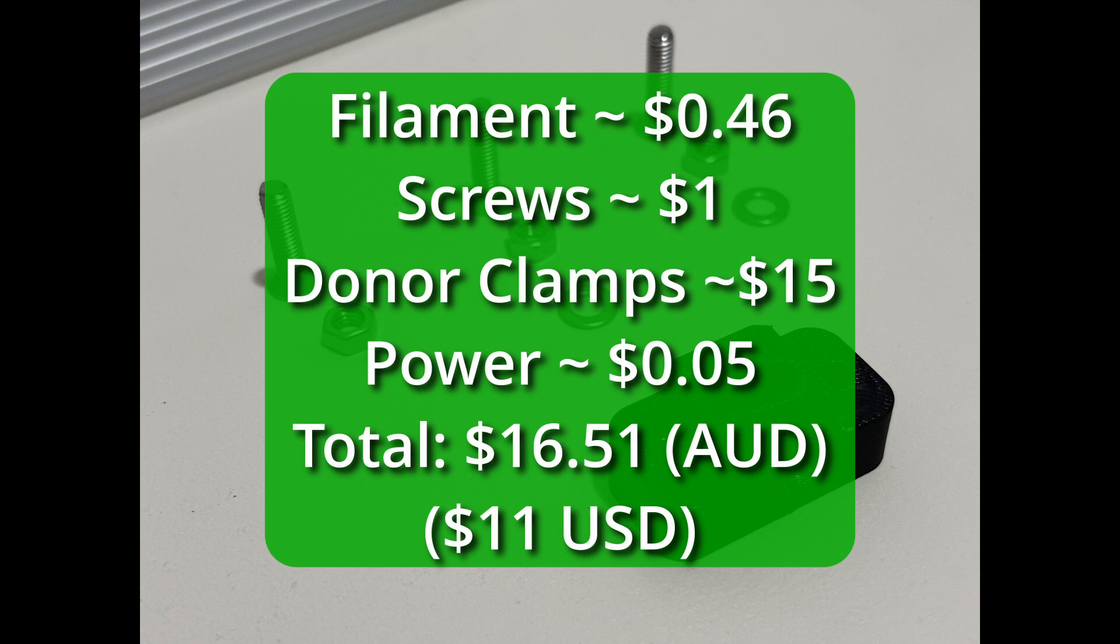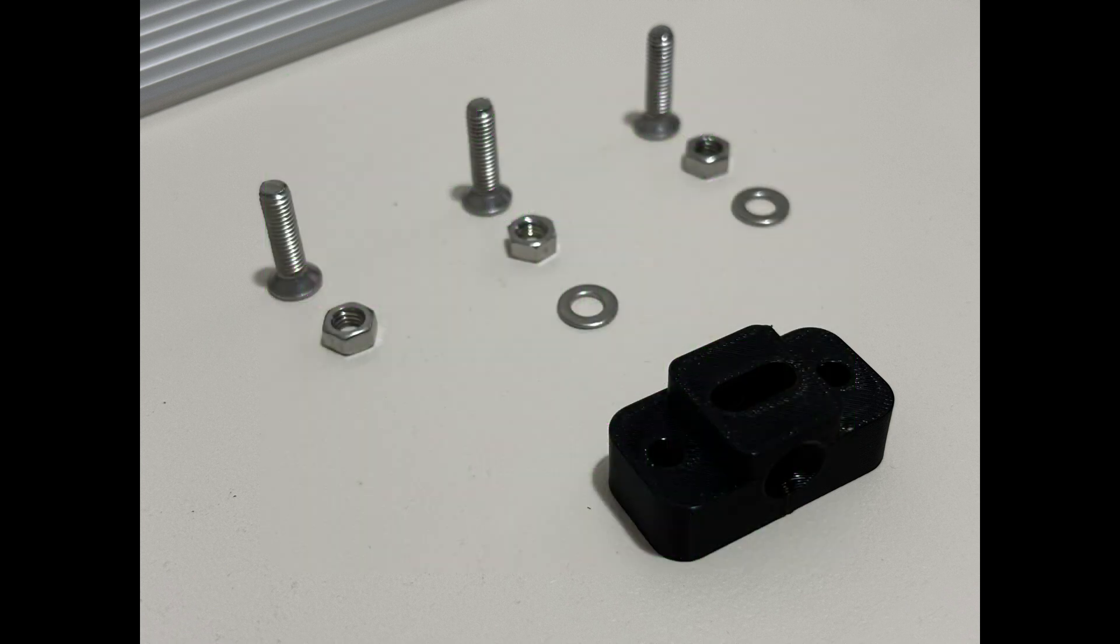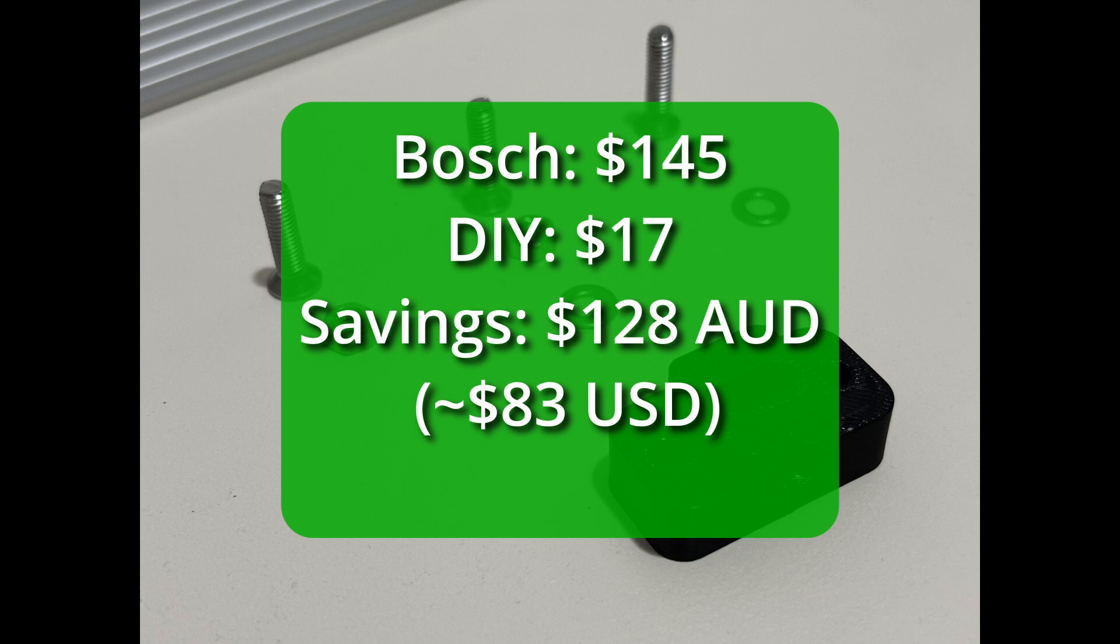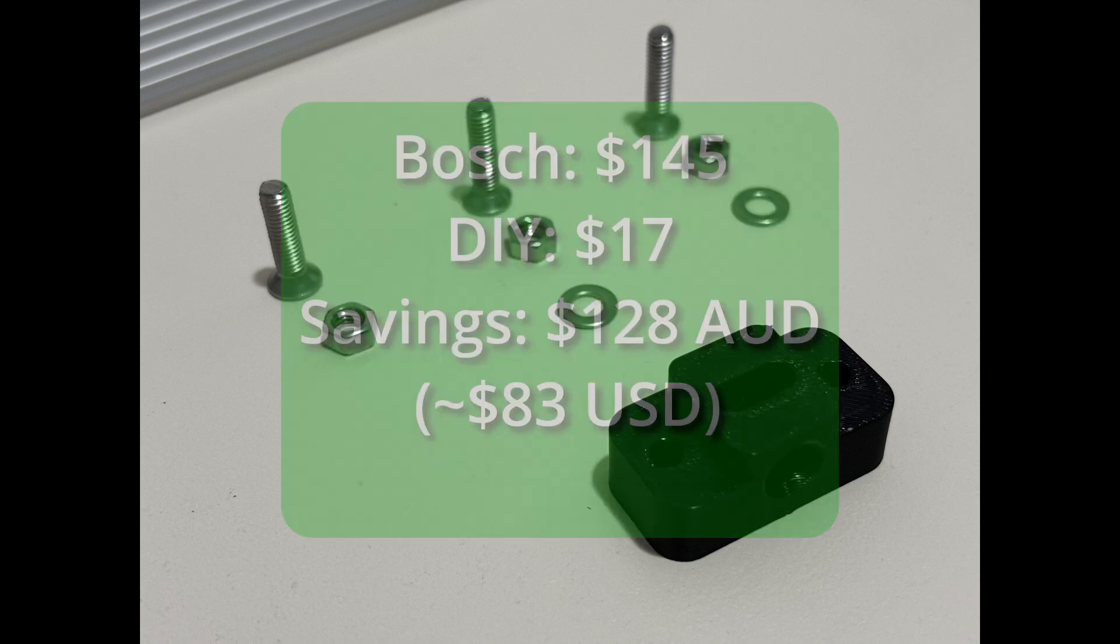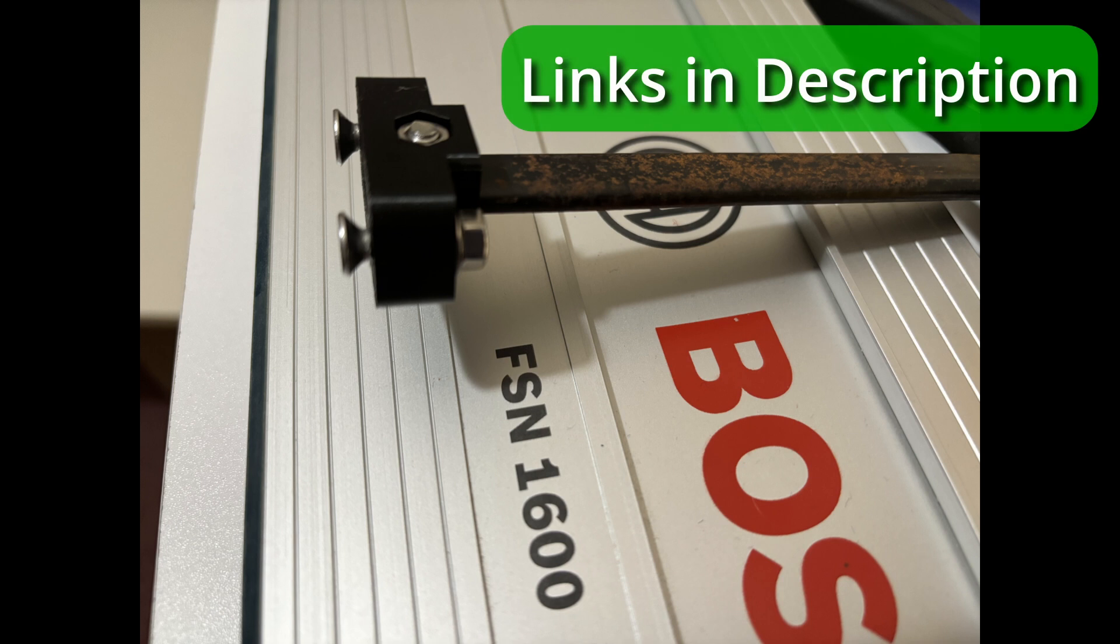The most expensive part of this project was the donor clamps. They were about $15 Australian dollars, bringing the total for this project to just over $16. With the Bosch clamps costing $145 Australian dollars locally and the DIY version $17, that's a saving of $128 Australian dollars. I'll put links to the 3D designs in the description. Cheerio!